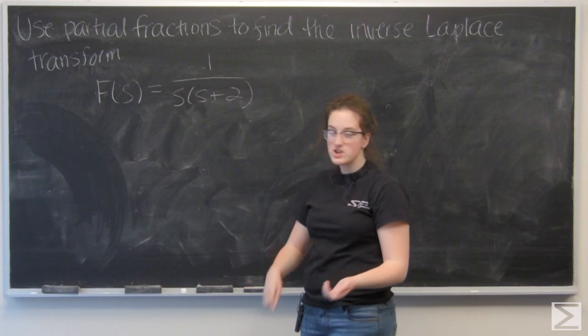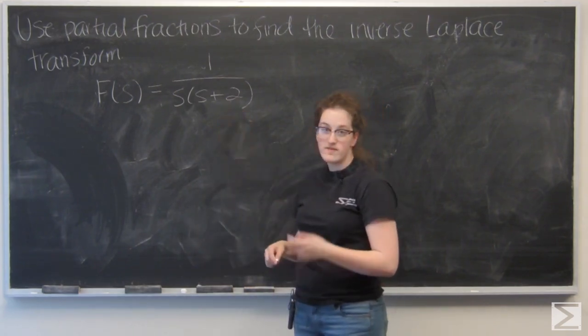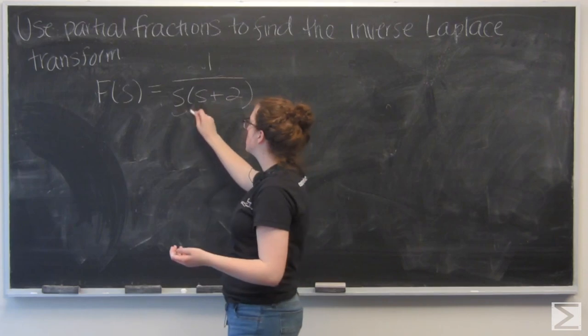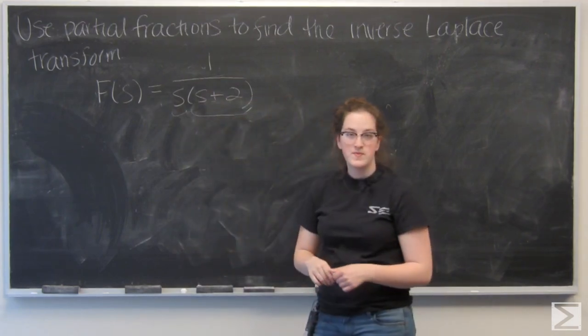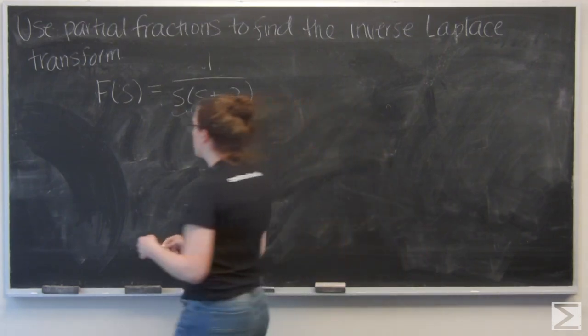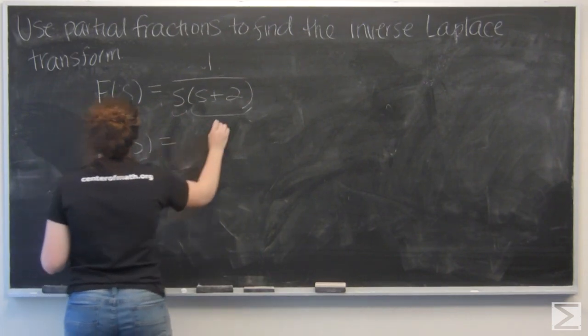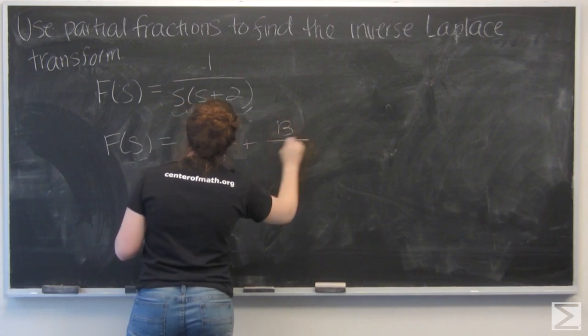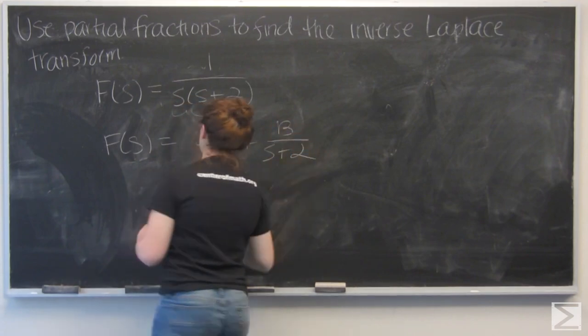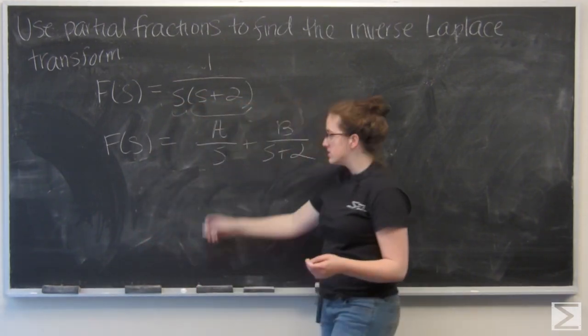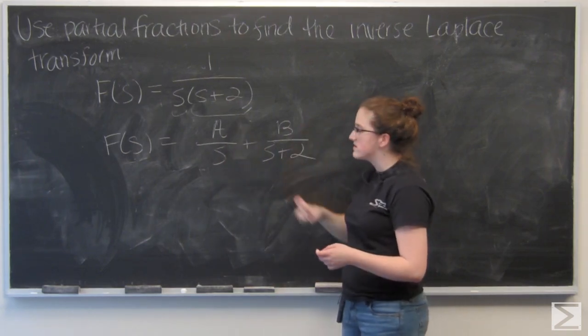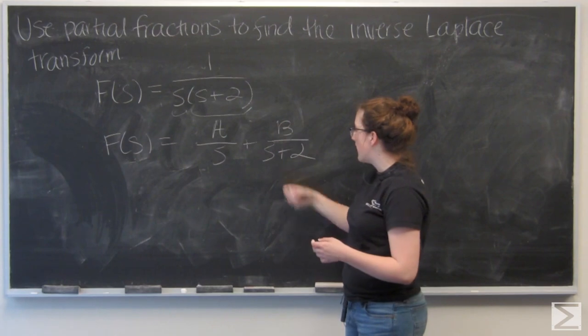Let's recall for partial fractions, I want to split this up based on the factors of the denominator. We already got two factors, s and s plus 2. So let's say that I want to write f of s as a sum of two fractions, one that's some constant over s and one that is another constant, or maybe the same one, over s plus 2.